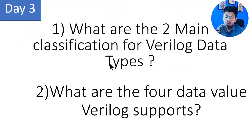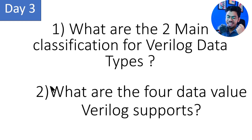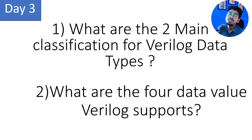Now the questions for today — we have two. First: what are the two main classifications of Verilog data types? Second: what are the four data values Verilog supports? As a hint for the second question: in digital binary, zero and one are supported for sure, but there are two other values Verilog data types support. Write your answers in the comments — I'll give the answers in the next episode. We still have 27 days to go, so a lot more is coming. If you haven't subscribed, please subscribe. These daily questions are directly from interview questions.